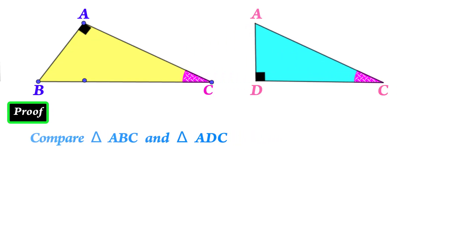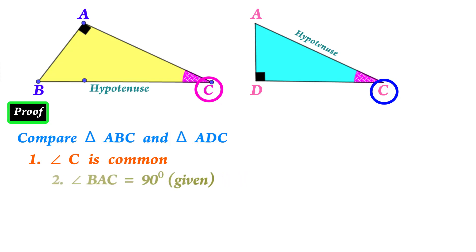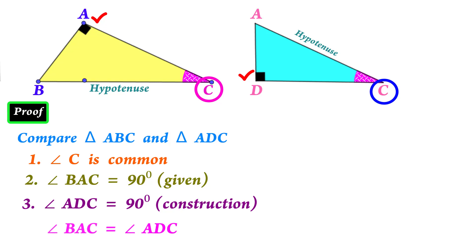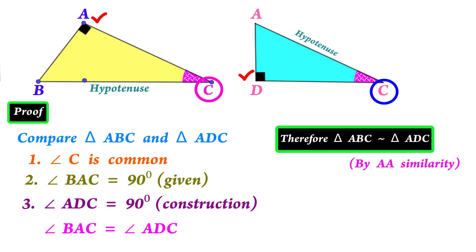Now compare these two triangles. What angle is common? C is common. The two angles are 90 degrees. Now, triangle ABC is similar to triangle ADC.